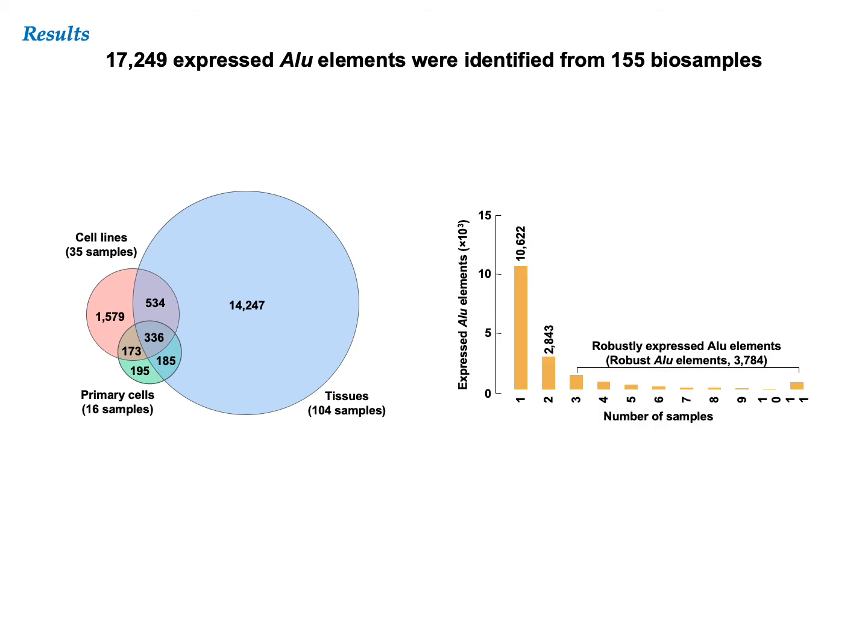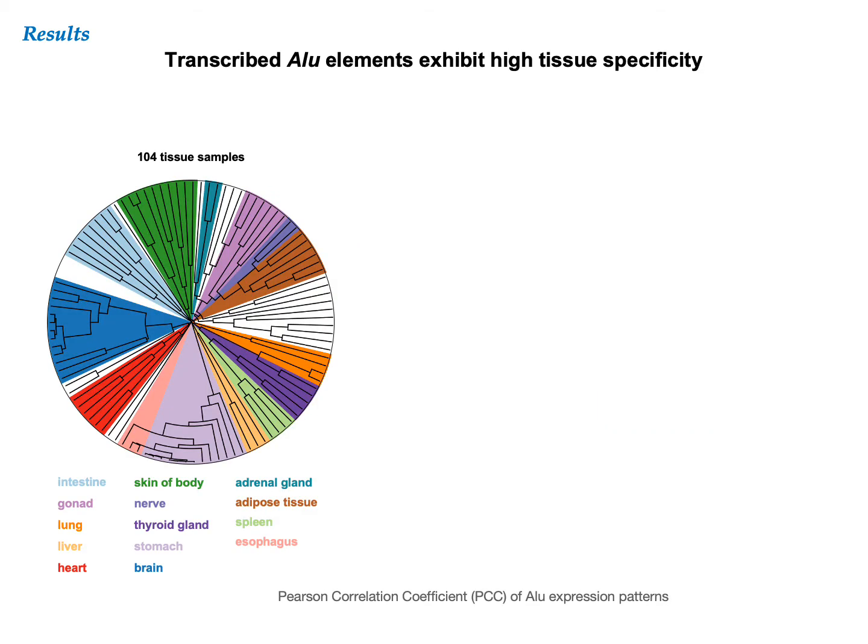Most of the expressed Alu elements were expressed in only one sample. For downstream analysis, we defined those 3,784 elements that were expressed in three or more samples as being robustly expressed. We examined the tissue specificity of the 17,000 expressed Alu elements across the 104 tissue samples. With colors indicating tissue types, we can see that samples of the same tissue cluster together according to the Pearson correlation coefficients of their Alu expression patterns.